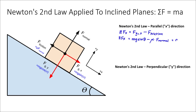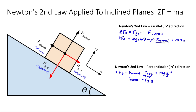Now I want an expression for the normal force, so I'm going to look at the y direction — the perpendicular direction. The sum of forces in the y direction is the normal force minus the y component of gravity, and this equals mass times acceleration, which is zero because the block is not accelerating in the perpendicular direction. That leaves us with the expression that the normal force equals the gravitational force in the y direction — meaning the normal force equals mg cosine theta, not just mg.